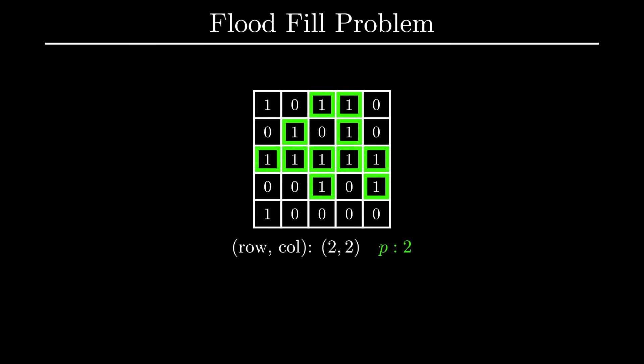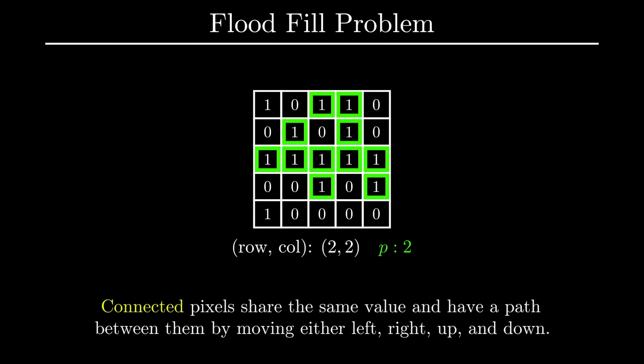Also the fact that, you know, this is a video about a graph algorithm, I suppose that could also be a bit of a giveaway. But in all seriousness, remember that connected pixels have the same value and are adjacent to each other in the left, right, upward, or downward direction.